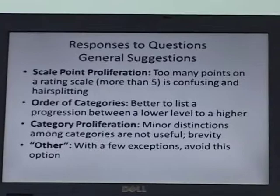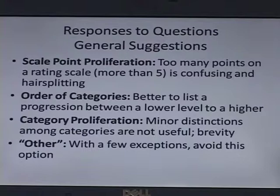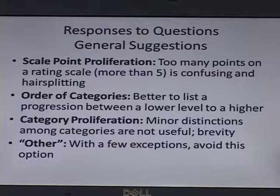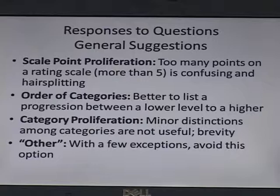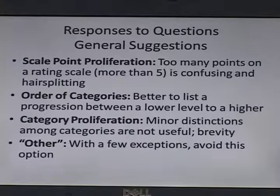General suggestions about responses: scale point polarization — if you go more than five options, you're just annoying people. Try to keep it five or less with your answer options, because then you're getting too fine and distinct. For the order of your categories, it's better to go from lower to higher, from positive to negative. Minor distinctions: don't do that. And avoid the 'other' option — it is highly recommended you don't throw it in there because it gives you too much unstructured data.